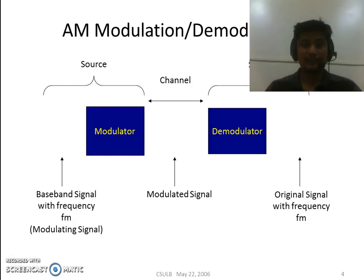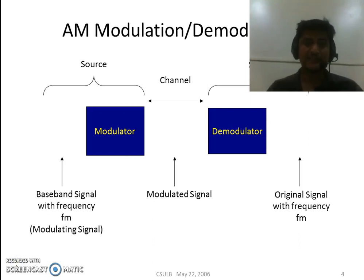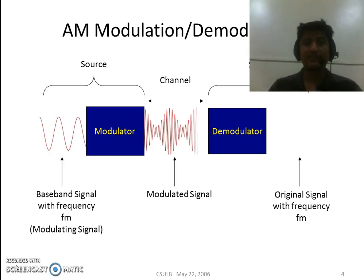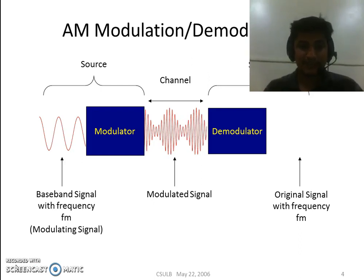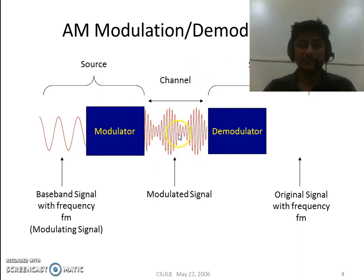Now let us observe what the modulation process exactly is. At the transmitter side, the amplitude of the carrier signal, which is of high frequency, gets varied according to the message signal. This high frequency carrier is then transmitted through a channel. In this animation, you can observe the message signal, and after modulation the amplitude of the carrier signal is varied according to the message signal.